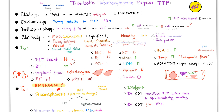Remember that TTP is a medical emergency. Treatment is plasmapheresis — plasma exchange (PEX). You take the patient's plasma and give them normal plasma containing the ADAMTS13 enzyme. Plasmapheresis is done with fresh frozen plasma or cryosupernatant. If there is no response to plasma exchange, you can give steroids and rituximab, plus dialysis if there is acute renal failure. Again, do not give platelets and do not give antibiotics.